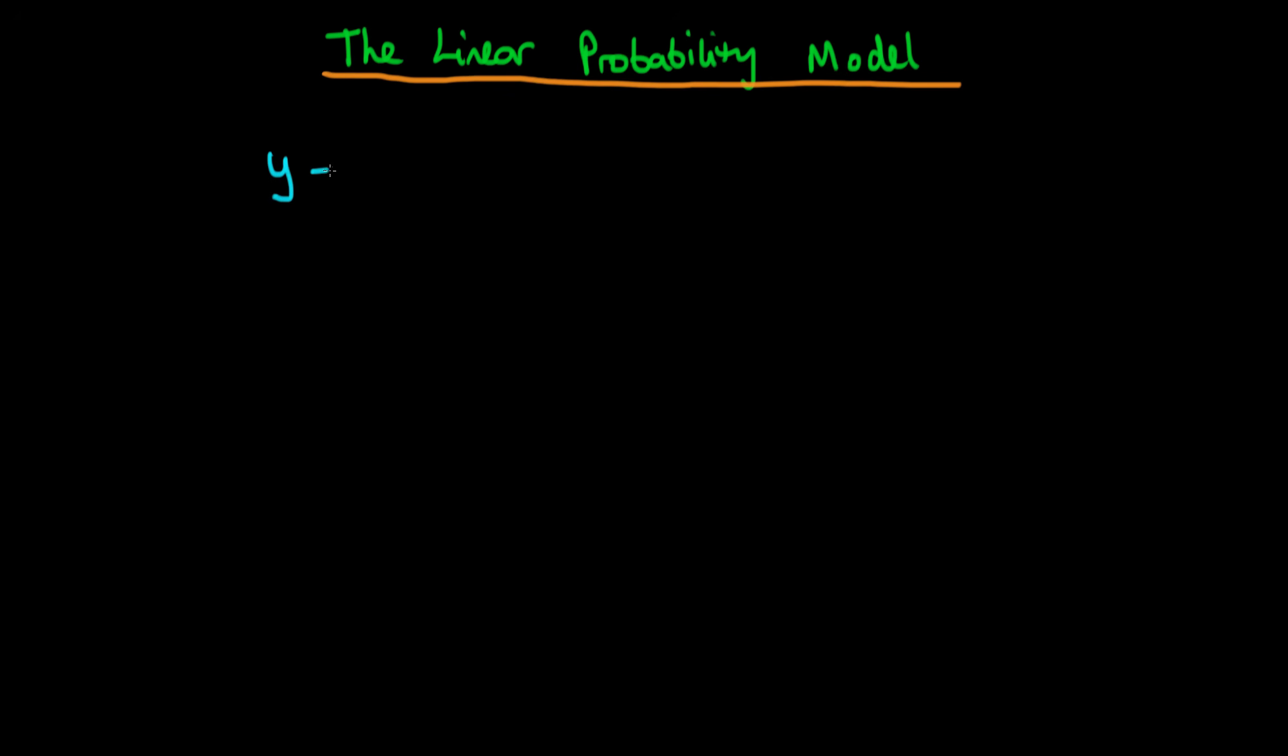To begin with, we're going to assume that we have a dependent variable y given by beta 0 plus beta 1 times some explanatory variable x plus some error term epsilon, where this epsilon as we normally assume is iid with a mean of zero and a variance of sigma squared, where iid here means that the errors are independent of one another and that they are identically distributed.